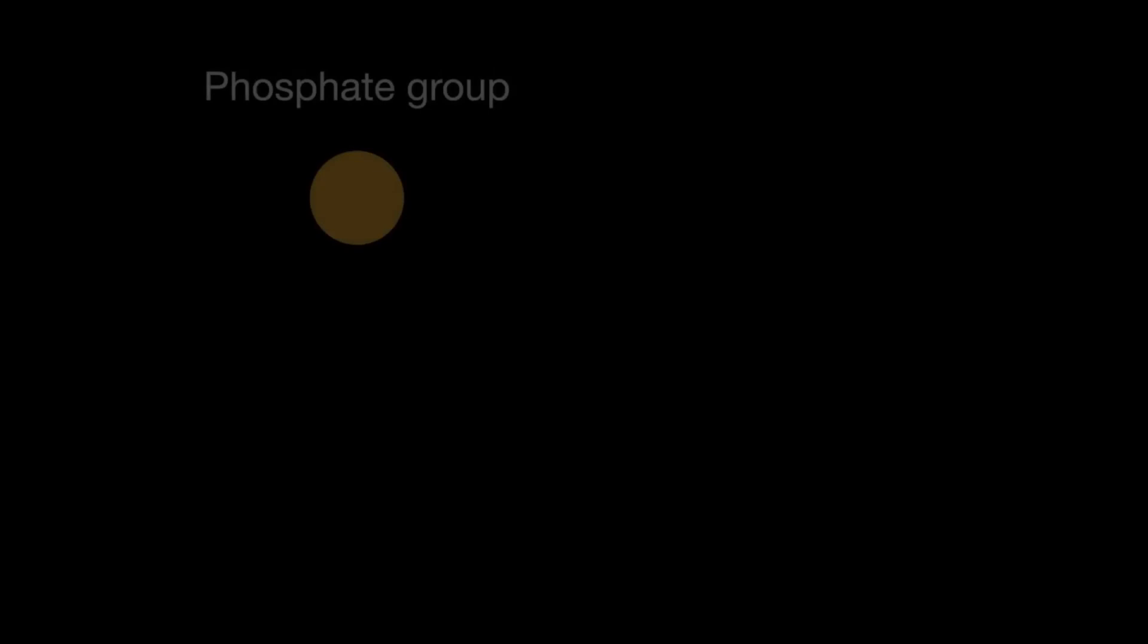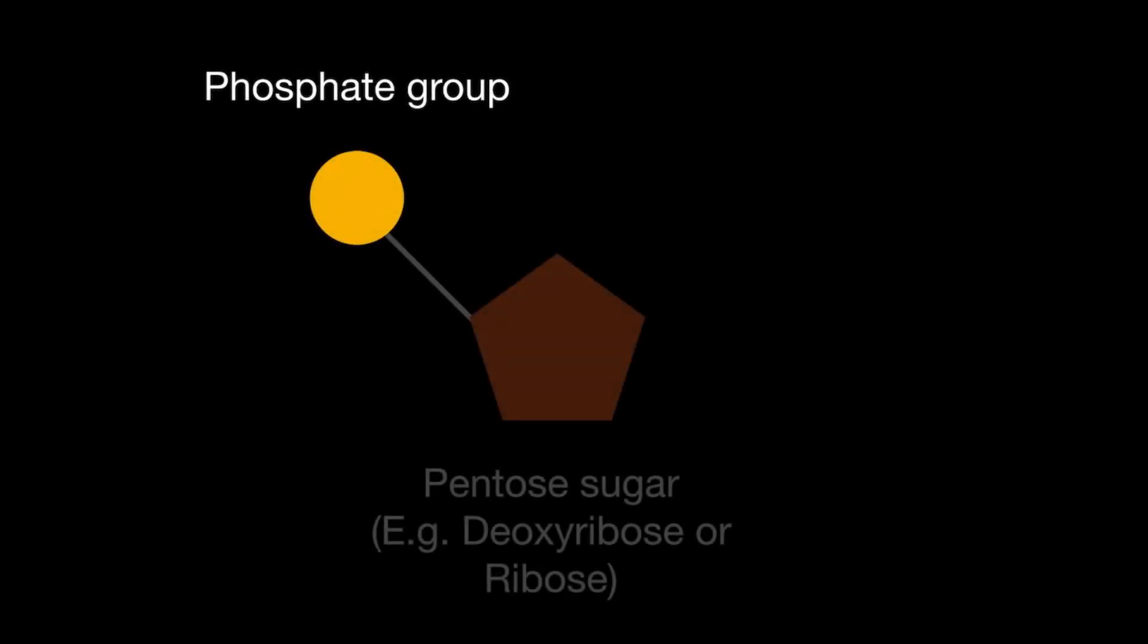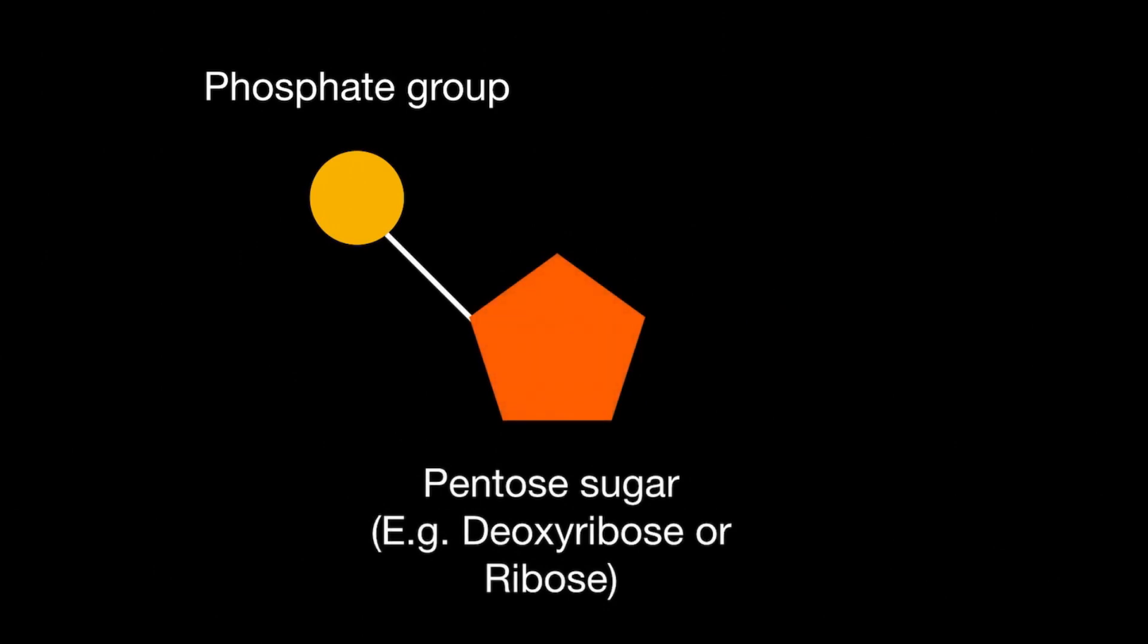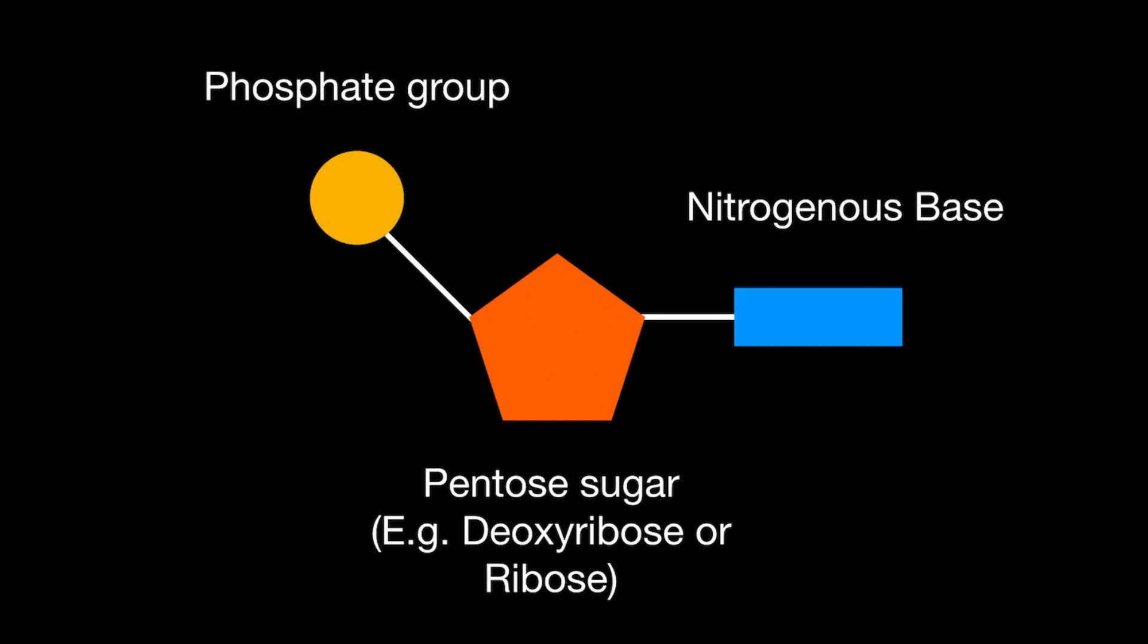The monomers of RNA and DNA are nucleotides, and we know that those are made of three component parts: the phosphate group, the pentose sugar which is deoxyribose in DNA or ribose in RNA, and the nitrogenous base.